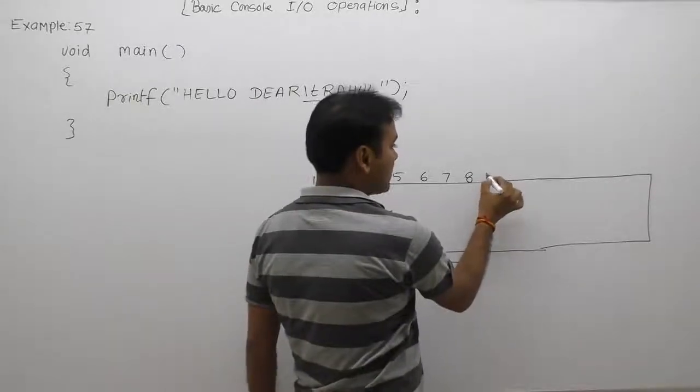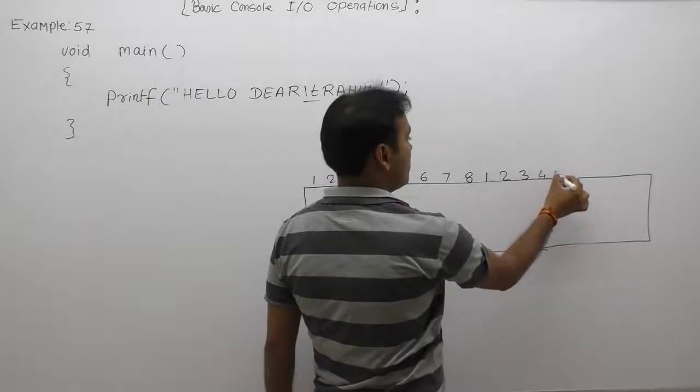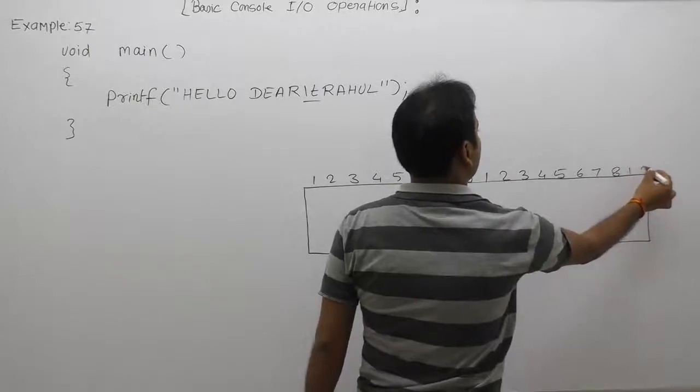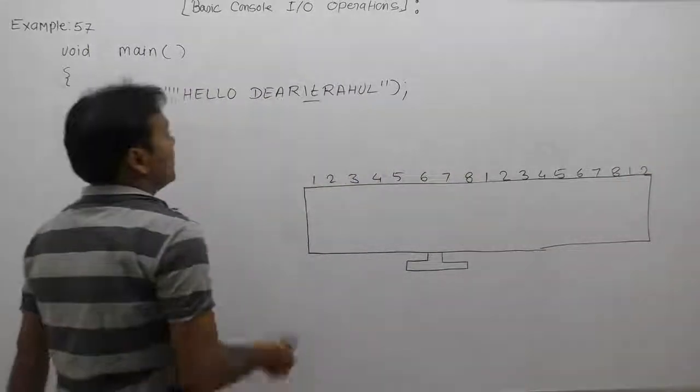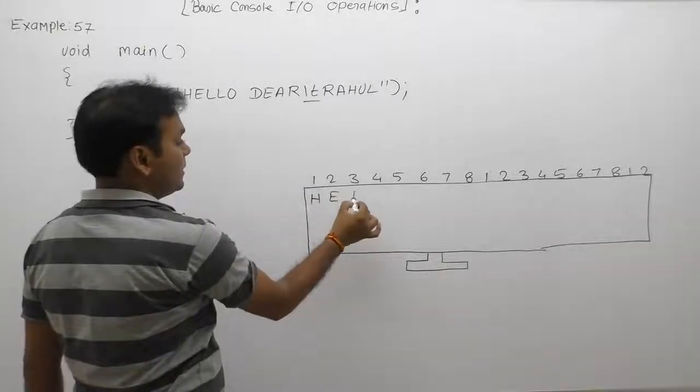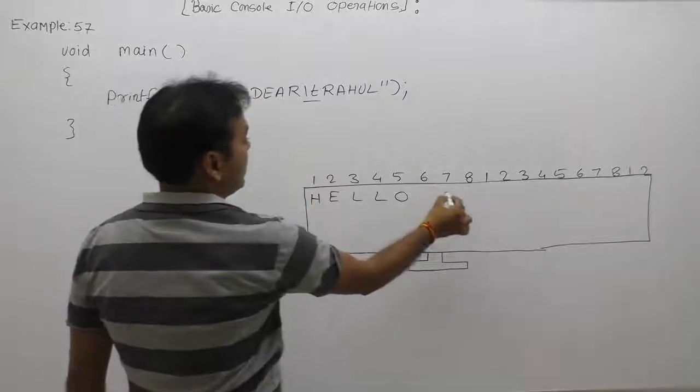We are starting from one, two, three, four, five, six, seven, eight, then again one, two, and so on. Initially it will paint H-E-L-L-O, after that a space, then D-E-A-R.